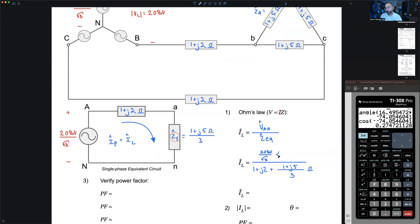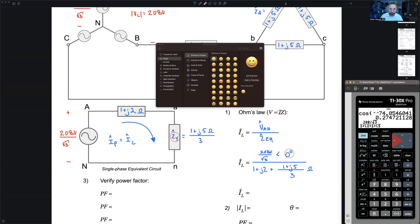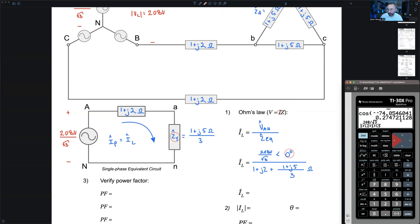What am I going to use for my voltage reference angle? Zero degrees, just like before. In my calculator, I already typed most of this in last time. So all I'm going to do is change this to a Y equivalent. I'm going to put a fraction sign, 1 plus J5, there's my delta, divided by 3, there's my Y equivalent. Enter one more time, there's my line current.